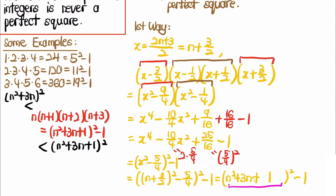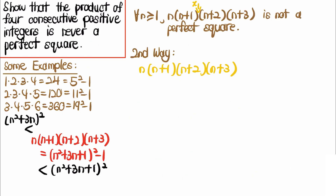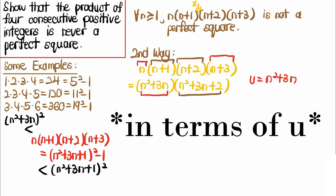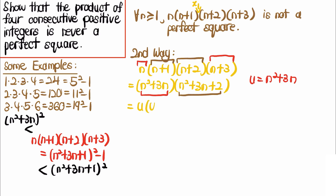Now let's look at the second way. Here, I multiply the first and last terms together, and the two middle terms together: n(n+3) = n² + 3n and (n+1)(n+2) = n² + 3n + 2. We let u = n² + 3n since both factors share that term, and rewrite the product as u(u + 2).